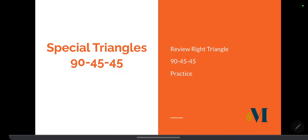Hello, you guys! I'm going to talk about special triangles — it's called a 90-45-45 right triangle. We're going to start off by reviewing what a right triangle looks like, then talk about a 90-45-45 right triangle, and then do some practice with it to get acquainted with that ratio.